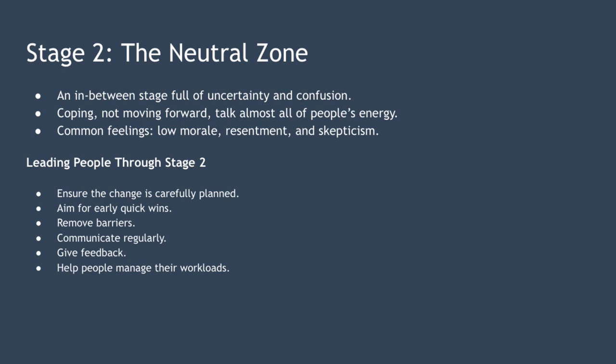Mechanisms leadership teams should use include: ensure the change is carefully planned to avoid surprises; aim for early quick wins to demonstrate progress and build momentum; remove barriers and blockers quickly as they appear; communicate regularly to remind the team of the goals; give feedback to individuals on how they are performing and encourage them to talk about how they feel; and finally, help people manage their workloads.